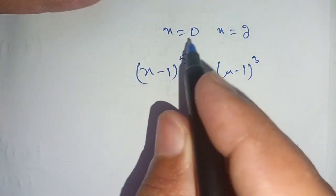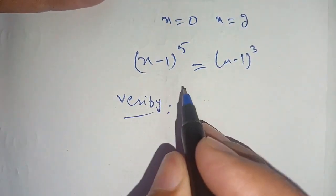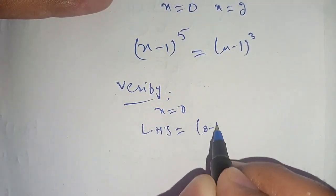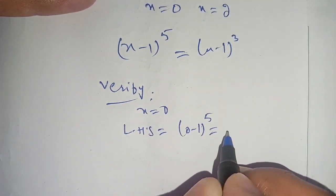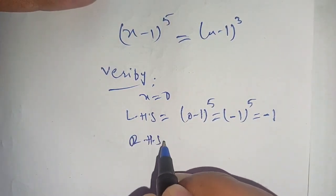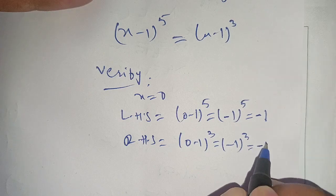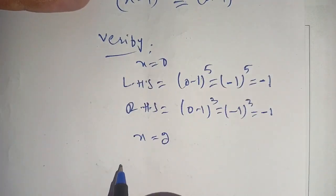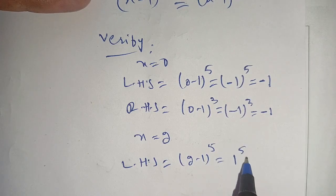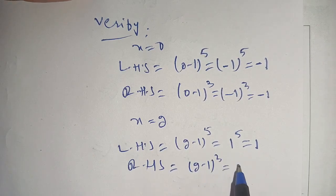Our final result is x equals 0 and x equals 2, and we need to verify these. When x equals 0, the left hand side is (0 minus 1) raised to power 5, which equals minus 1. The right hand side becomes (0 minus 1) raised to power 3, which equals minus 1. When x equals 2, the left hand side is (2 minus 1) raised to power 5, which equals 1, and the right hand side is (2 minus 1) raised to power 3, which also equals 1.